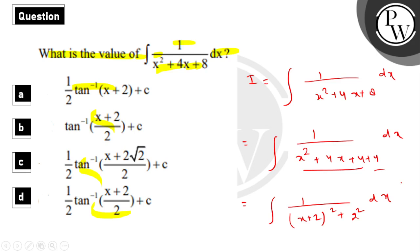Integration of 1 upon x square plus a square. What do we do? 1 upon x square plus a square. That is integration 1 upon a, that is 1 upon 2, tan inverse x plus 2 upon 2 plus constant of integration c.